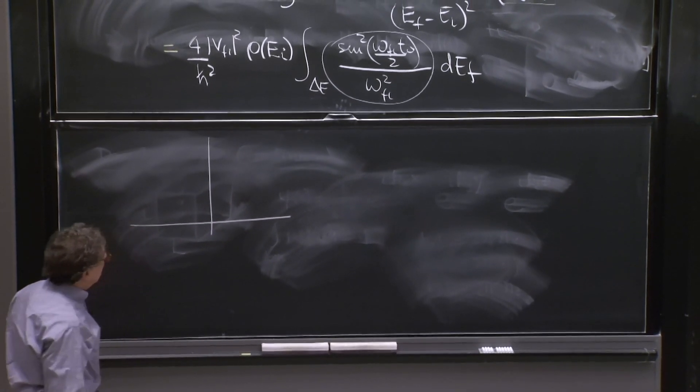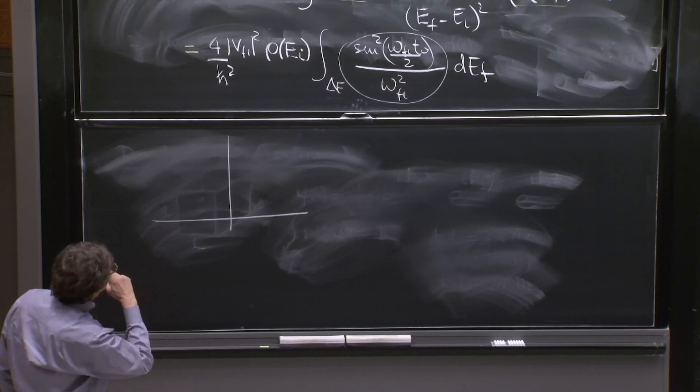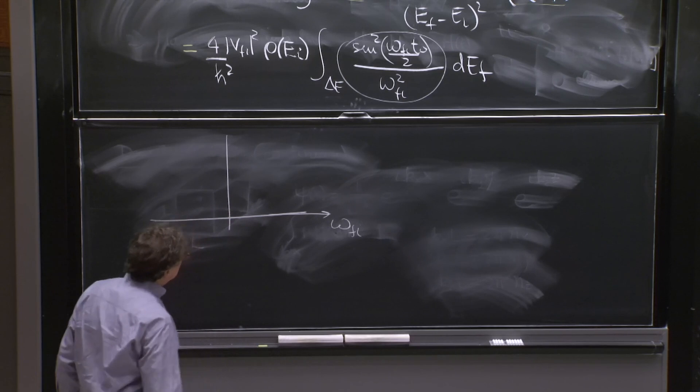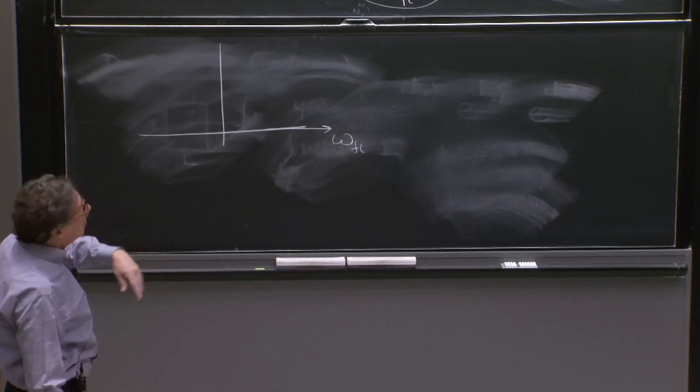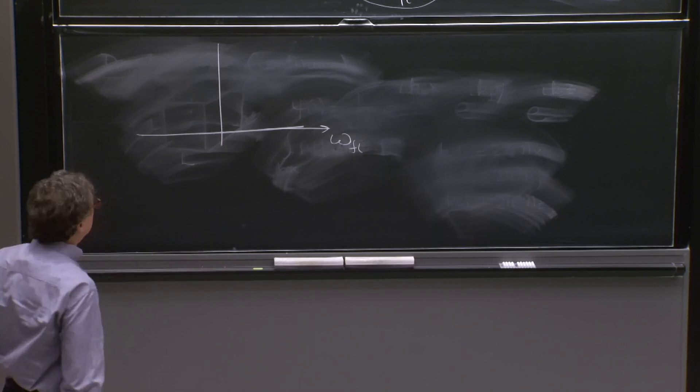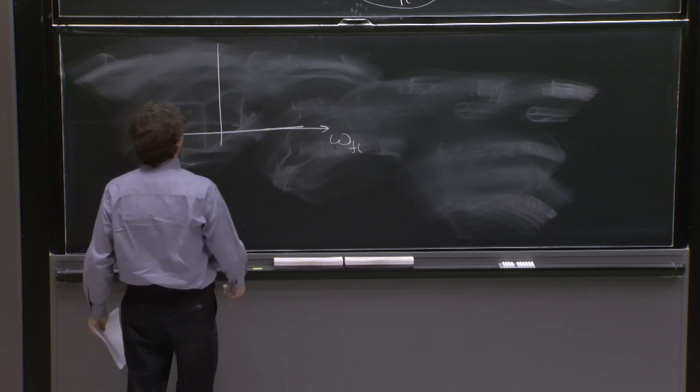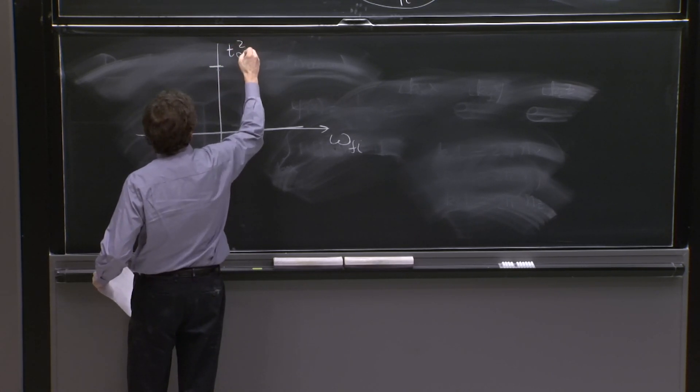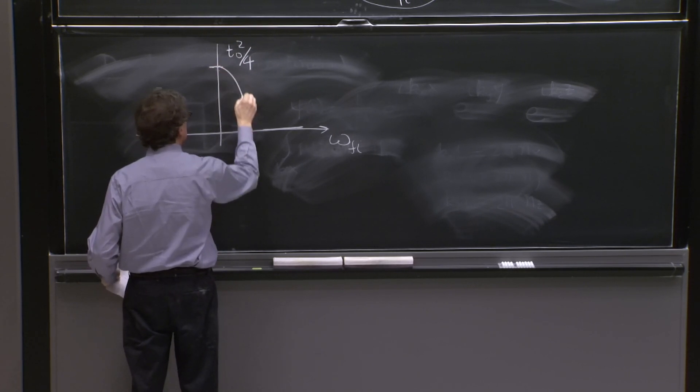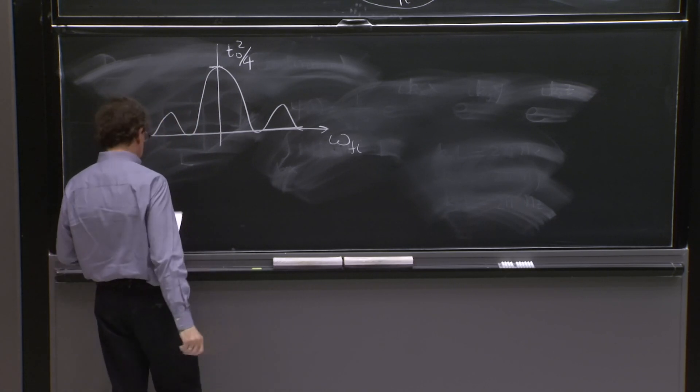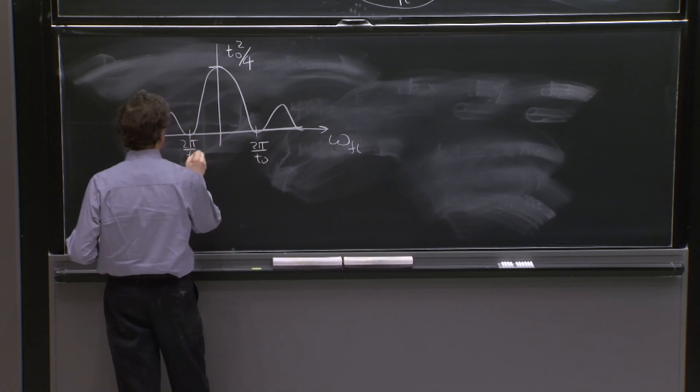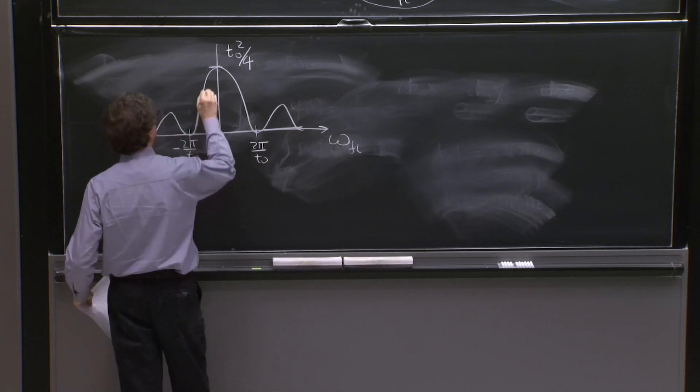Well, sine squared of x over x squared goes to 1. This we're plotting as a function of omega Fi. Why? Time is not really what we're plotting into these things. We're plotting, we're integrating our energy, Ef. And omega Fi is Ef minus Ei. So omega is the variable you should be plotting. And when omega goes to 0, this whole integral goes like t0 squared over 4. And then sine squared of x over x squared does this thing. And the first step here is 2 pi over t0, 2 pi over t0, and so on.